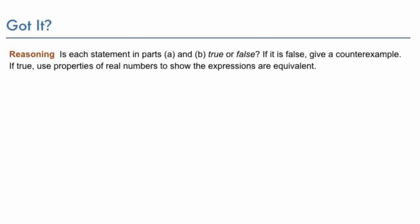And here's your chance to show that you have got it. Reasoning question. Is each statement in parts A and B true or false? If it is false, give a counterexample. If true, use properties of real numbers to show the expressions are equivalent. First, part A. For all real numbers j and k, j times k equals the quantity k plus 0 times j.